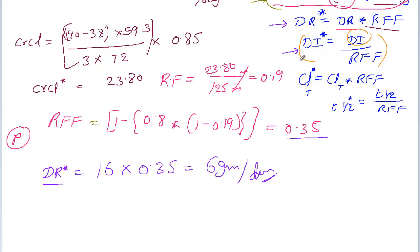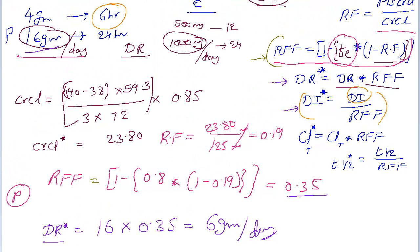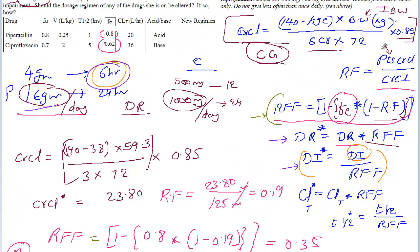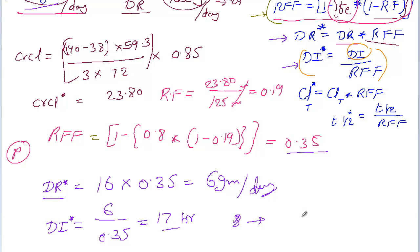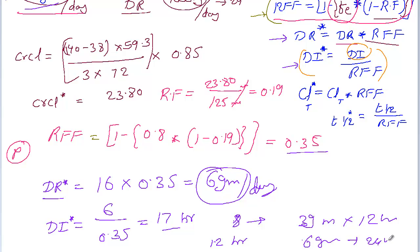Now we calculate the dose interval. The normal patient's dose interval is every 6 hours. For the renal-impaired patient, the new dose interval is 6 divided by the renal fudge factor 0.35, giving approximately 17 hours. Since 17 hours is not clinically practical, the best approach is to dose every 12 hours — giving 3 grams every 12 hours, which equals 6 grams per 24 hours. Problem solved.